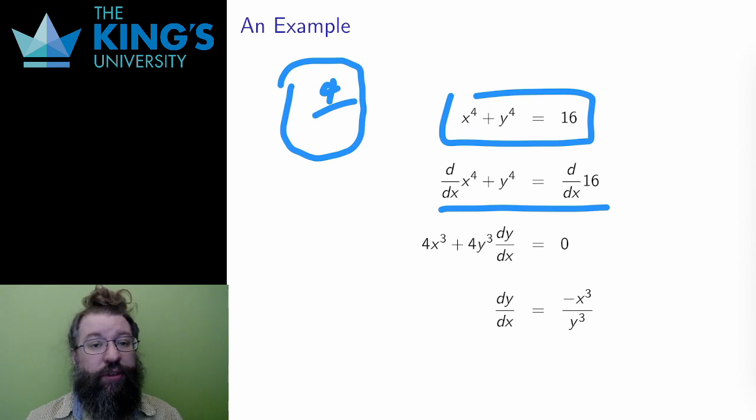This is called an implicit derivative. It's implicit since the function, y of x, isn't known. It's implicitly assumed to be there, but not explicitly defined.